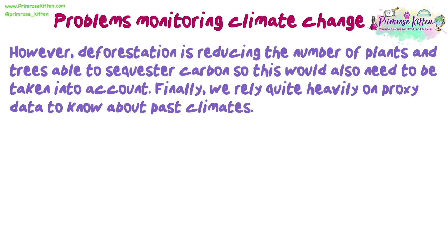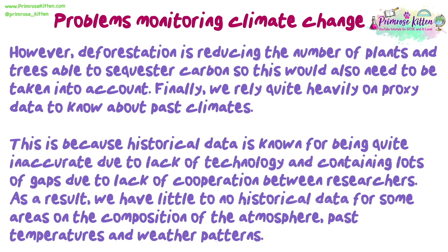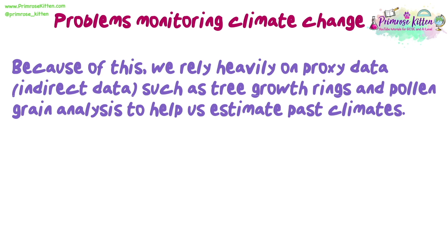Finally, we rely quite heavily on proxy data to know about past climates. This is because historical data is known for being quite inaccurate due to lack of technology and containing lots of gaps due to lack of cooperation between researchers. As a result, we have little to no historical data for some areas on the composition of the atmosphere, past temperatures, and weather patterns. Because of this, we rely heavily on proxy data, or indirect data, such as tree growth rings and pollen grain analysis, to help us estimate past climates.